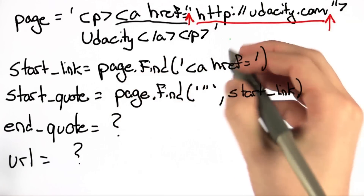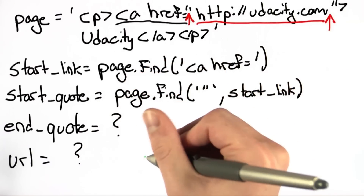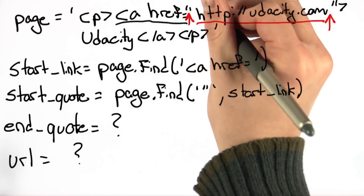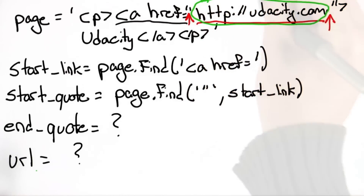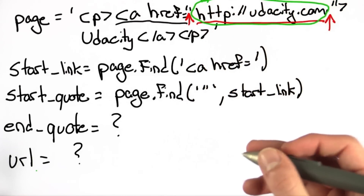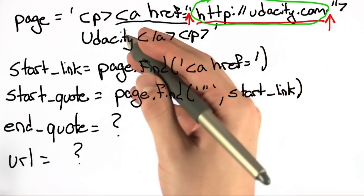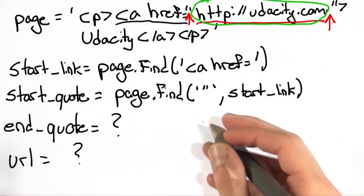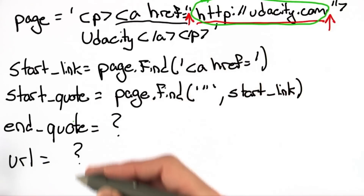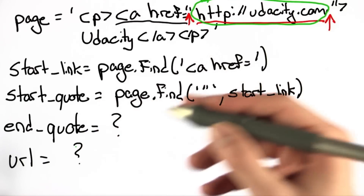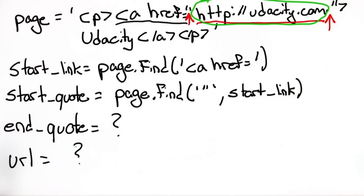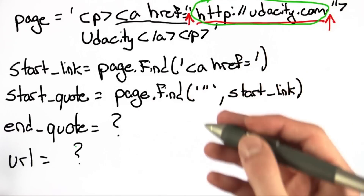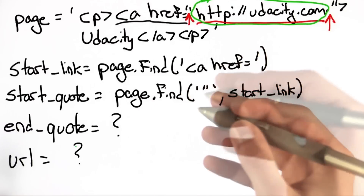So once you have the start and end quotes, you need to use the subsequence operator — the colon — to get what's in between the quotes. To help solve this, I recommend using a concrete example like I have here, and printing out your results and your variables to help you know where you go wrong and how close you are to getting the correct solution. This is going to be a useful programming technique as we get later in the class.